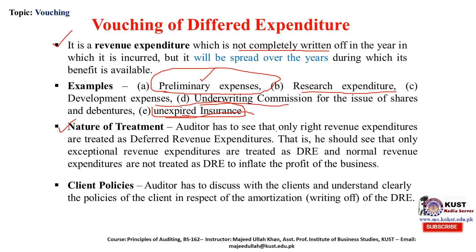The auditor has to verify that only rightful revenue expenditure is treated as deferred revenue expenditure. Sometimes companies defer expenditure to overstate current year profit. The auditor should ensure that only exceptional revenue expenditures are treated as deferred, and that normal revenue expenditures are not deferred to inflate the profit of the business.